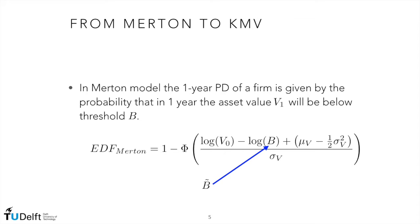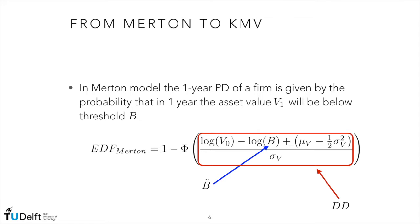We then substitute capital B — the liability level according to Merton's model — with a capital B tilde, which is a more representative quantity of the complexity of the liability structure of a company. We are considering all the liabilities that are payable within one year, including all the intermediate payments. Then we substitute the entire argument of the survival function with the DD, the distance to default. Finally, we substitute the normal survival function with an empirical survival function. This is essentially how we move from Merton's model towards Moody's KMV.